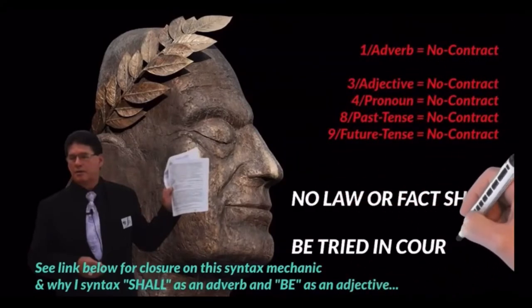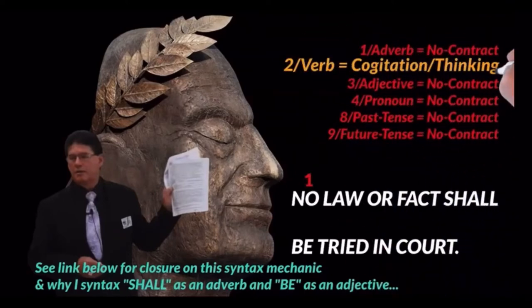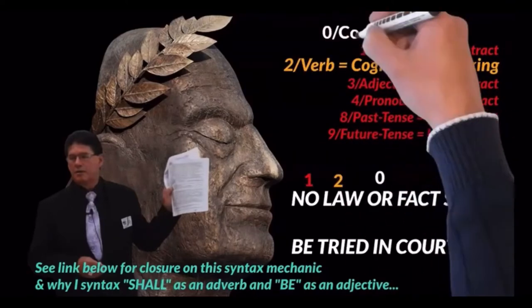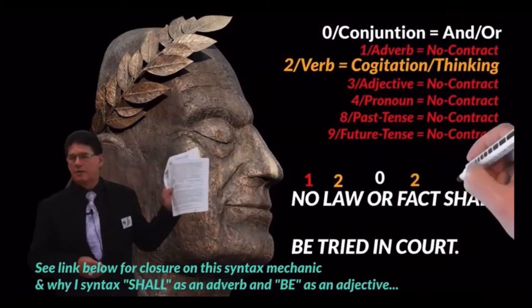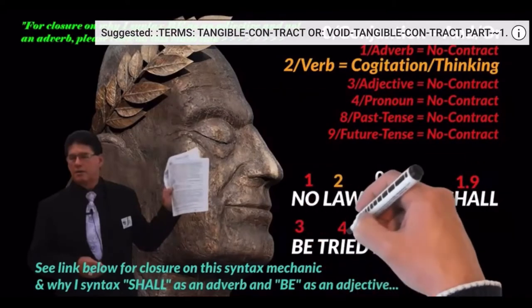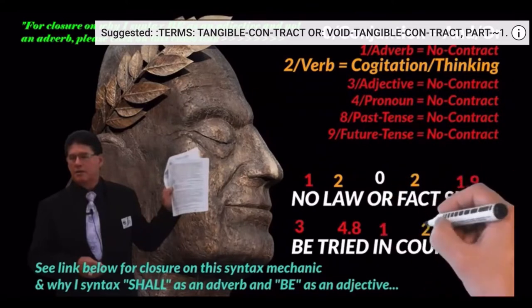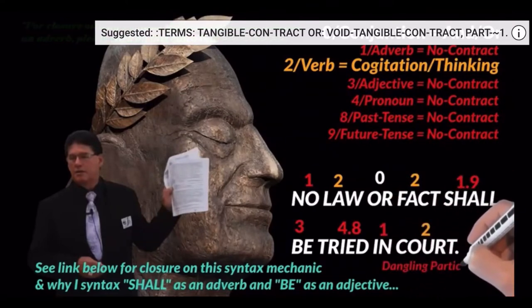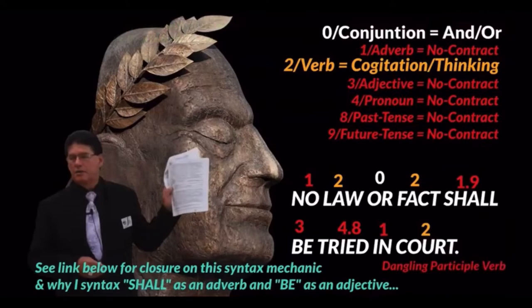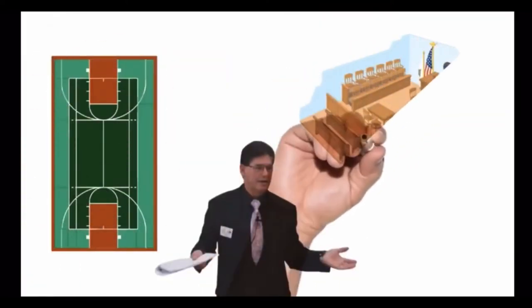So you've got an adverb that's a negative adverb. It modifies the verb or is a conjunction. Fact becomes a verb. Shall is a pronoun. Be is an adverb, making tried to be a pastime verb. In is an adverb. It modifies the verb court. It's a dangling participle. You've got a verb law, a verb fact, and a verb court. You can only have one jurisdiction in court. It's called the least common denominator.